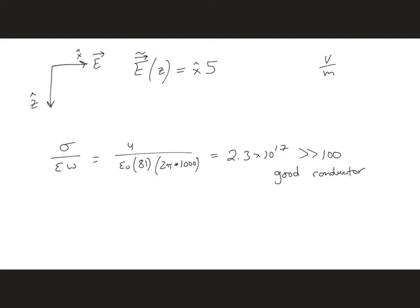So knowing it's a good conductor, we can go to table 7-1 and we can use the simplified expressions for calculating alpha and beta. For both of these, these are going to be equal to each other for a good conductor. Once we calculate them, we'll get 0.2.